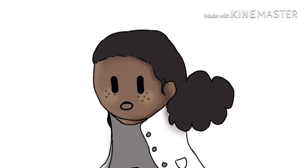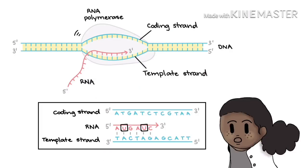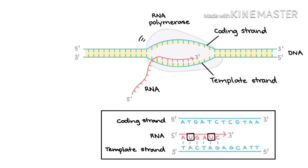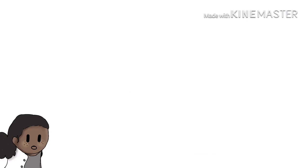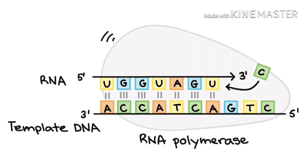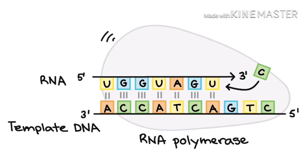The second step is transcription elongation. Once RNA polymerase is in position at the promoter, elongation can begin. Basically, elongation is the stage when the RNA strand gets longer, thanks to the addition of new nucleotides. During elongation, RNA polymerase walks along one strand of DNA known as the template strand. For each nucleotide in the template, RNA polymerase adds a matching complementary RNA nucleotide to the end of the RNA strand.